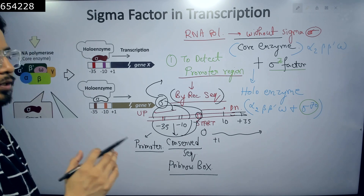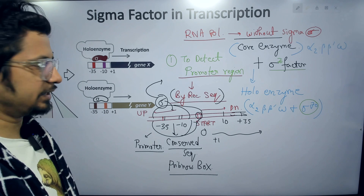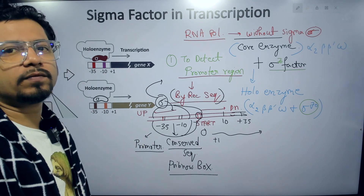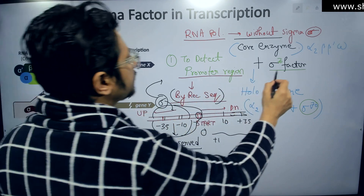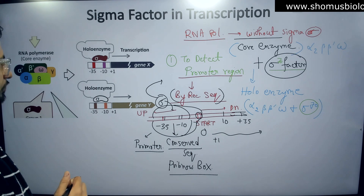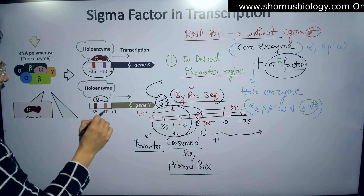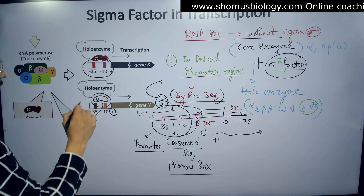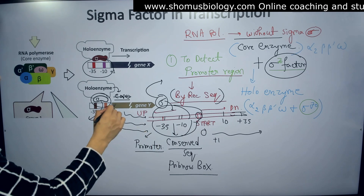Initiation of prokaryotic transcription is performed by the RNA polymerase and the sigma factor. The sigma factor does the job of detecting and binding to the promoter — that is done by the common sigma factor, sigma 70. As you can see in the image, the holoenzyme with sigma factor binds to minus 35 to minus 10. Once they find the start site, the sigma factor gets released, the holoenzyme turns into a core enzyme, and synthesis of mRNA begins from plus one.